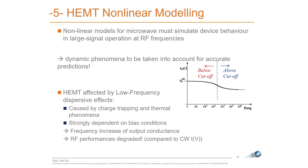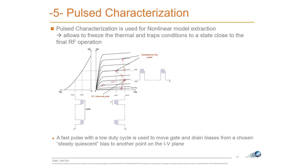When performing IV pulse measurements, we start from a quiescent voltage — typically class AB for GaN — and apply short pulses from that bias point. During the pulse, S-parameter measurements can also be performed to accurately construct the model at the temperature controlled by the biasing point.